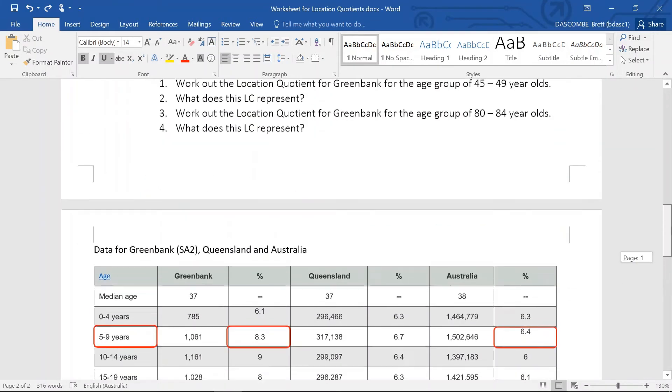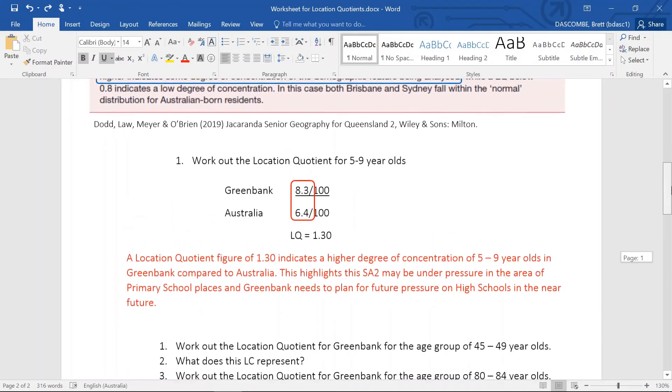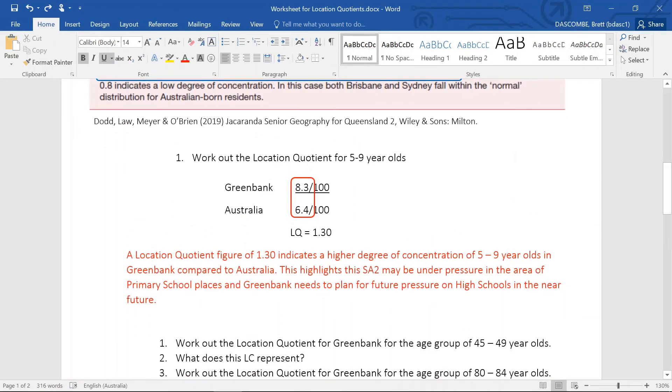So we're going to go back up. We're going to work out the location quotient for 5 to 9 year olds, Greenbank: 8.3 divided by 100. Australia is 6.4 divided by 100.